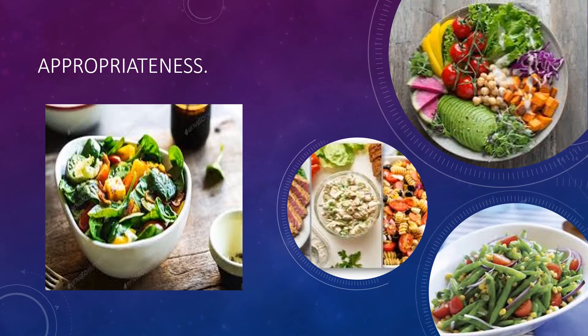Appropriateness. This consideration is broad and encompassing. For example, it may not be appropriate to serve certain foods to people of specific religions, medical conditions, ages, or ethnic backgrounds. Or it may be redundant to repeat the use of certain ingredients in a multi-course meal, including items such as seafood, mushrooms, cheese, or peppers.